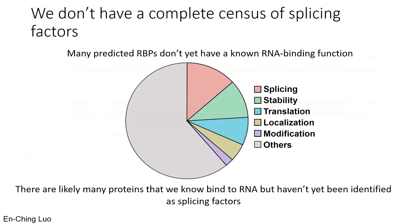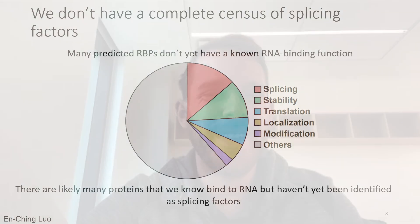One of the big questions we have is: of this group of 2,000 to 5,000 predicted RNA binding proteins, what fraction of them can control different molecular functions in a cell? For the majority of these predicted RNA binding proteins, they have not yet been annotated to have any actual molecular function.